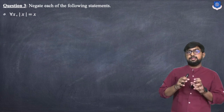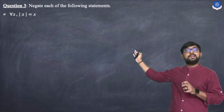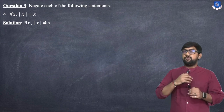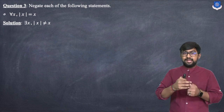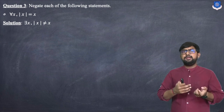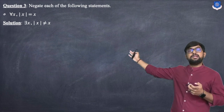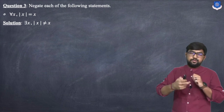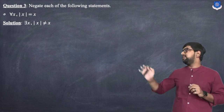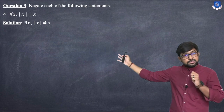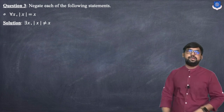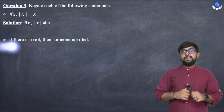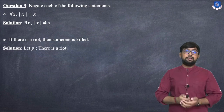Next, negate the statement '∀x, |x| = x'. The negation of a universal quantifier gives an existential quantifier, so it becomes: ∃x, |x| ≠ x, meaning there exists an x such that the absolute value of x is not equal to x.